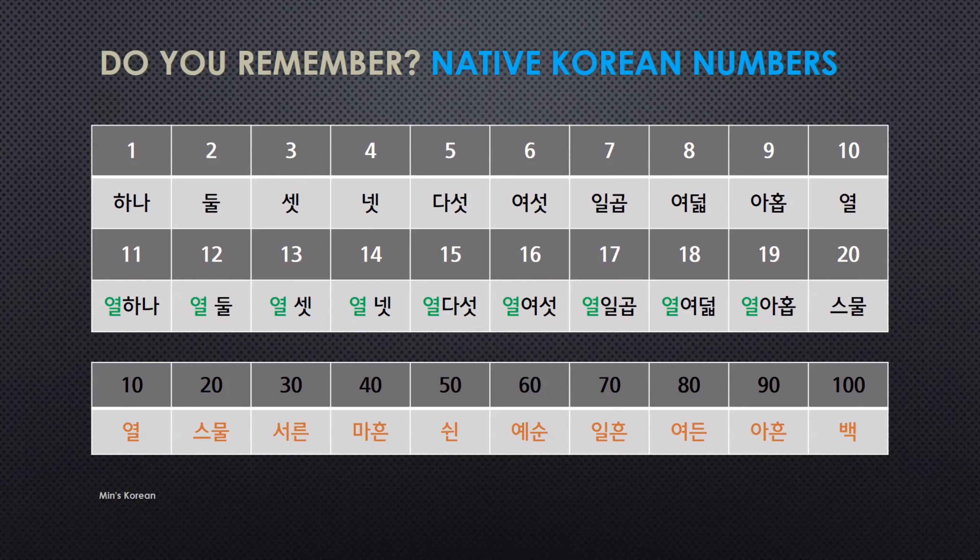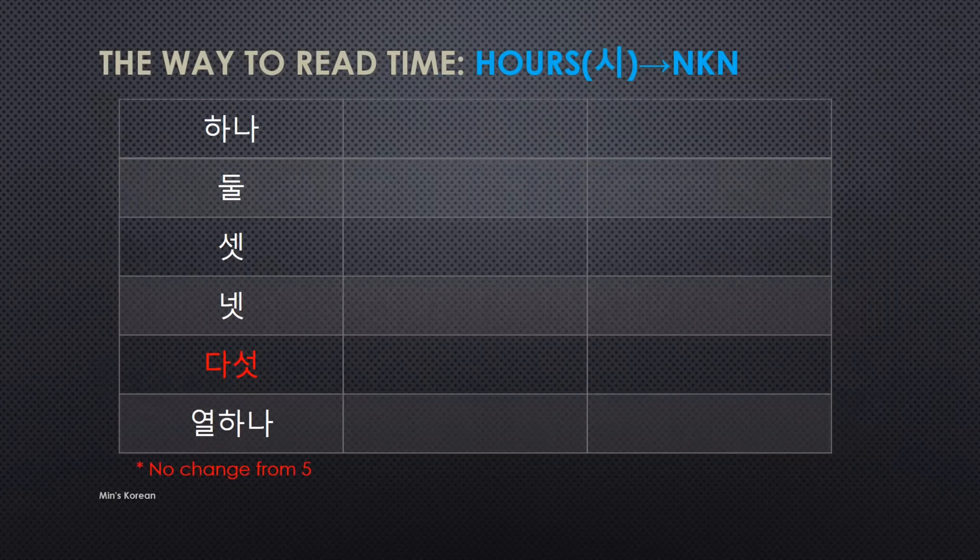So the way to read time: for the hours o'clock, you have to use Native Korean numbers, and for minutes, you have to use Sino-Korean numbers — so we need both. Now, for numbers 1, 2, 3, 4 — these change form. 1 is 하나, but when you say time with 시 together, you have to say 한 시 for 1 o'clock. For 2 and 3, you have to omit the 받침, the final consonant.